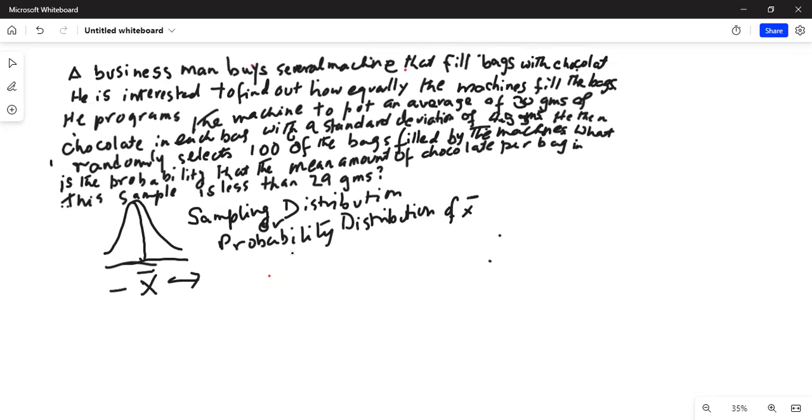Now from central limit theorem for a large sample size, which is n greater than 30, states that the mean of the sampling distribution, which is given by mu x bar, is equal to mu. And sigma x bar, which is the standard deviation of the sampling distribution, sometimes called the standard error, is given by sigma divided by square root of n.